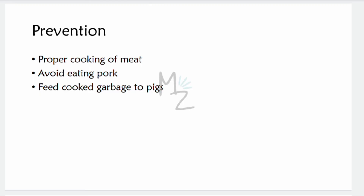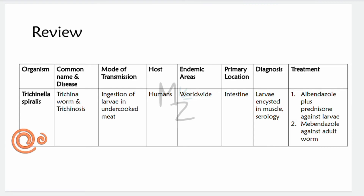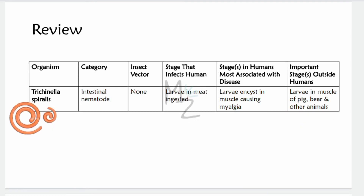Quick review: the organism is Trichinella spiralis, common name Trichina, causing trichinosis. Mode of transmission: ingestion of larvae in undercooked meat; less likely fecal-oral route. End-stage hosts: humans; intermediate hosts: pigs and other carnivores. Endemic: worldwide. Main site: striated skeletal muscle, can also target cardiac muscle. Diagnosis: larvae encysted in muscle and serologic tests. Treatment: albendazole plus prednisone against larvae, mebendazole against adult worm. No insect vector; infective stage is larvae in meat; diagnostic stage in humans is larvae encysted in muscle causing myalgia. Important stage outside humans is larvae in muscle of pigs, bears, and other animals.